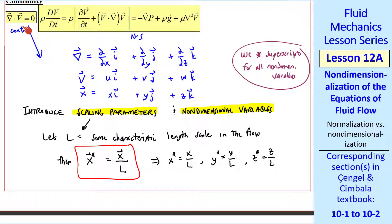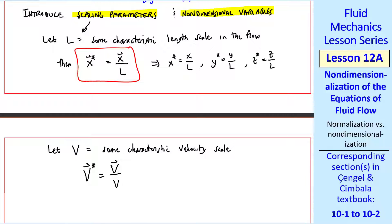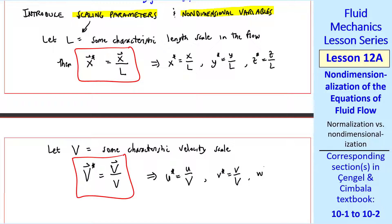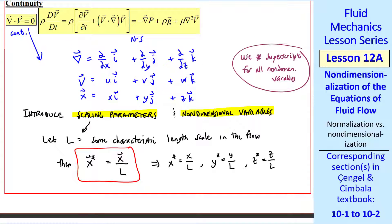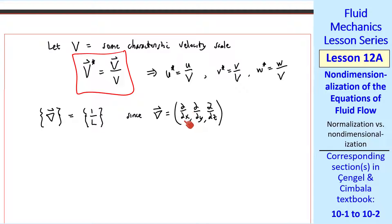We also have a velocity in our continuity equation, so we need a characteristic velocity scale — I'll use capital V. Typically this might be an average speed or a freestream speed if you're talking about flow over a body. Then we define the non-dimensional velocity as the dimensional velocity over the characteristic velocity. Dimensions of speed over dimensions of speed is non-dimensional. In Cartesian coordinates: u* = u/V, v* = v/V, and w* = w/V. The dimensions of the gradient operator are dimensions of 1 over length, since the del operator in Cartesian coordinates has all components containing a length in the denominator.